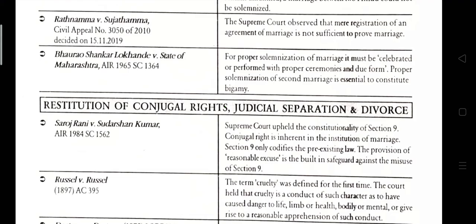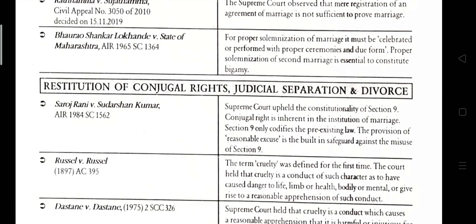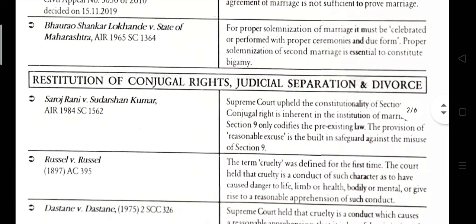Restitution of Conjugal Rights and Judicial Separation and Divorce. Saroj Rani vs. Sudarshan Kumar, AIR 1984, Supreme Court 1562. The Supreme Court held the constitutionality of Section 9 — conjugal right is inherent in the institution of marriage. Section 9 only codifies the pre-existing law. The provision of reasonable excuse is a built-in safeguard against the misuse of Section 9.